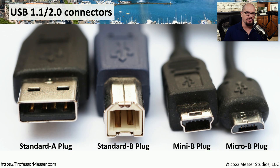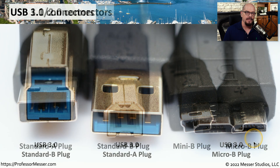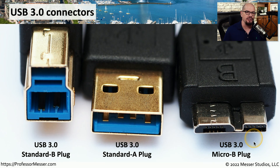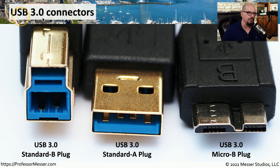Another set of popular connectors are used with Universal Serial Bus, or USB. These are USB 1.1 and 2.0 connectors — the standard A plug is very common. The standard B plug is used for peripherals, especially printers, and there are many B plugs and micro B plugs commonly used for mobile devices. The increased bandwidth in the USB 3.0 specification required some of these connectors to be changed, and you can see differences with the USB 3.0 standard B plug and the micro B plug. The USB 3.0 standard A plug is identical in size to previous standard A plugs, but there are additional pins inside to support the higher speeds and bandwidths of USB 3.0.